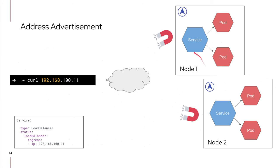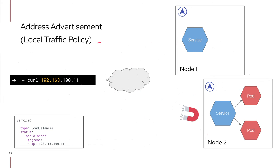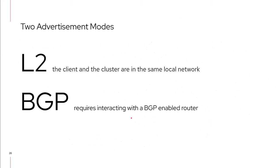The other part is advertisement — the more network-heavy side. We need to attract traffic directed at the virtual IP to our nodes. MetalLB must also honor the local traffic policy, meaning if pods are running only on a subset of nodes, MetalLB must be smart enough to attract traffic only to those nodes where an endpoint is running. There are two advertisement modes: L2, which is quite simple and requires the client and cluster to be on the same subnet, and BGP, which is more complex and powerful and requires interaction with a BGP-enabled router.